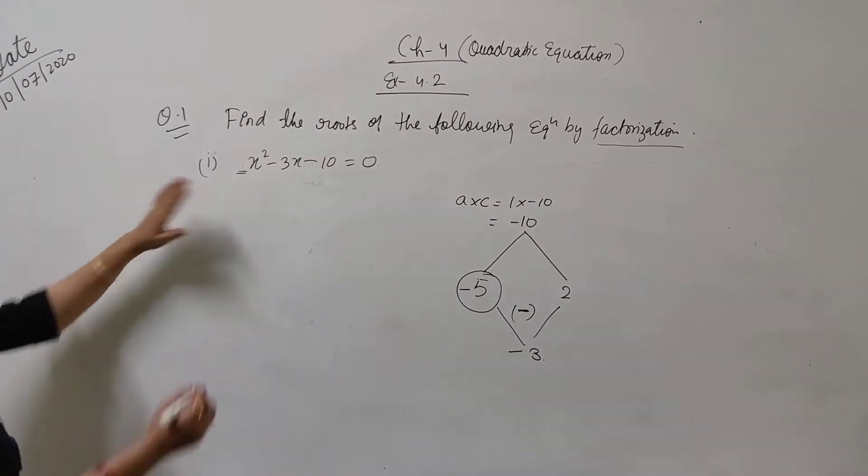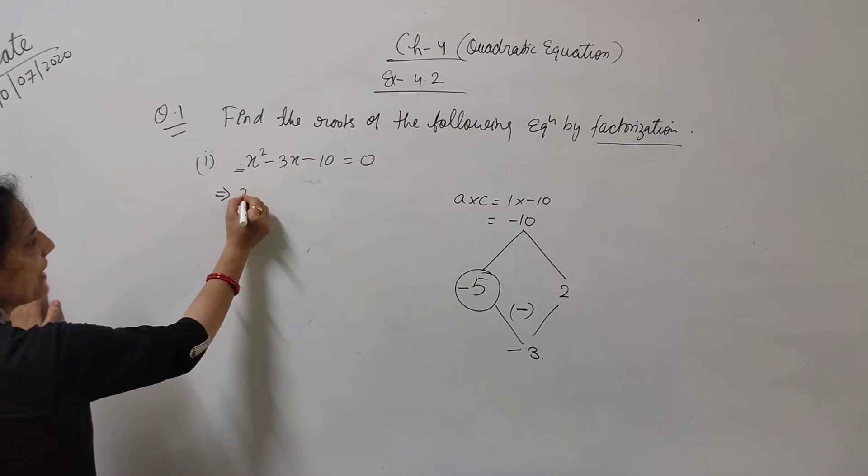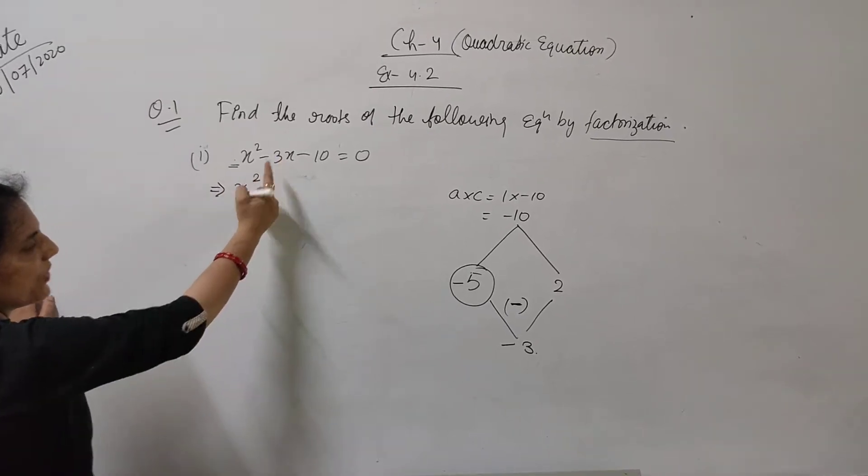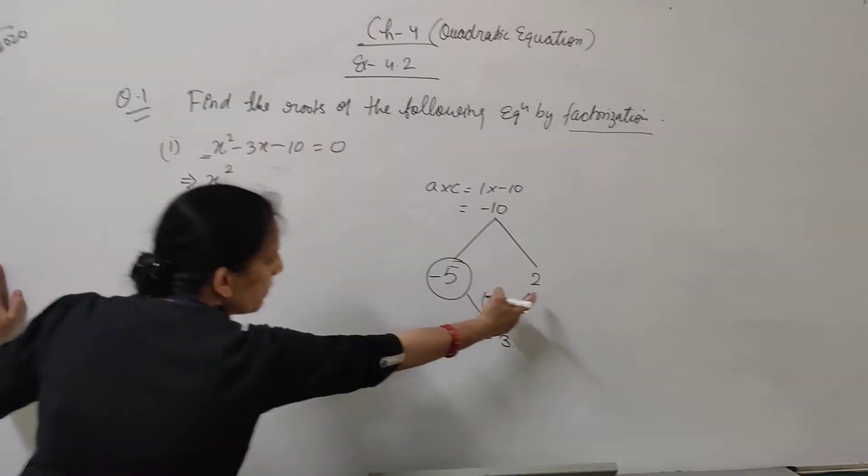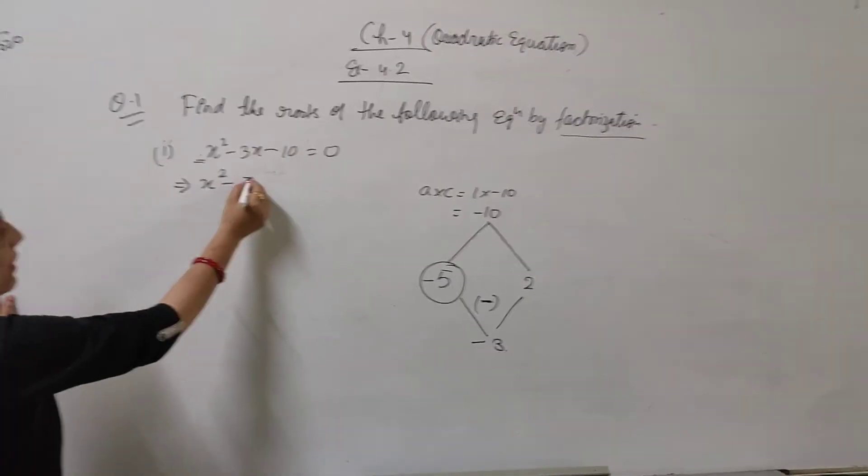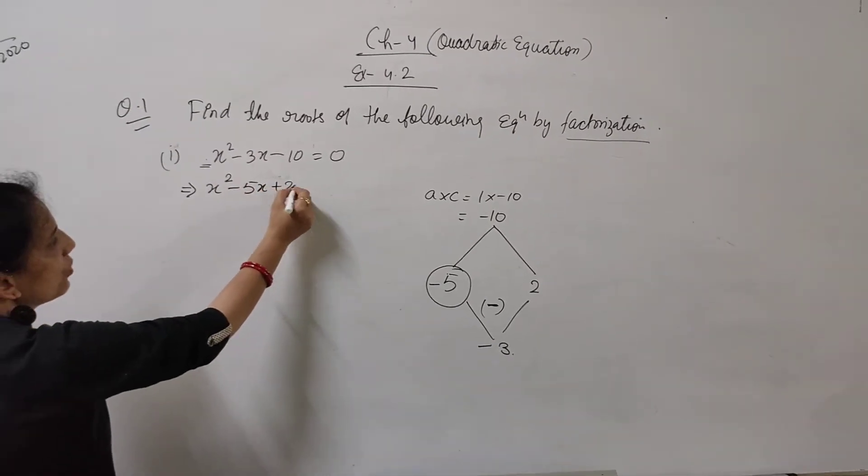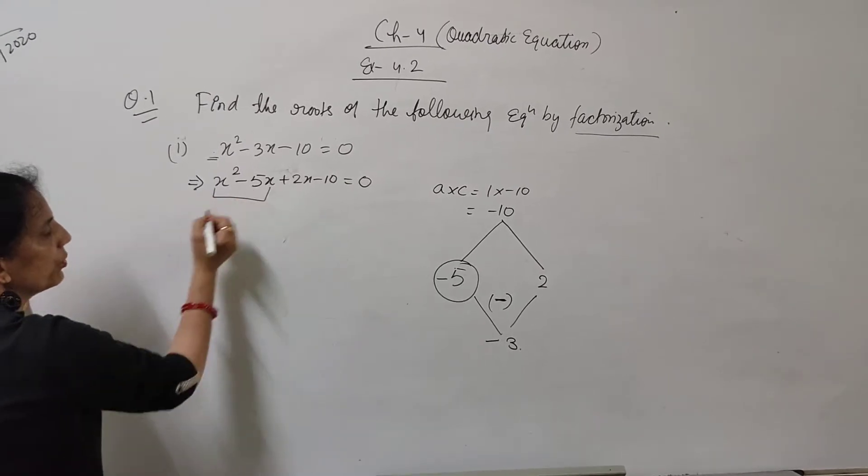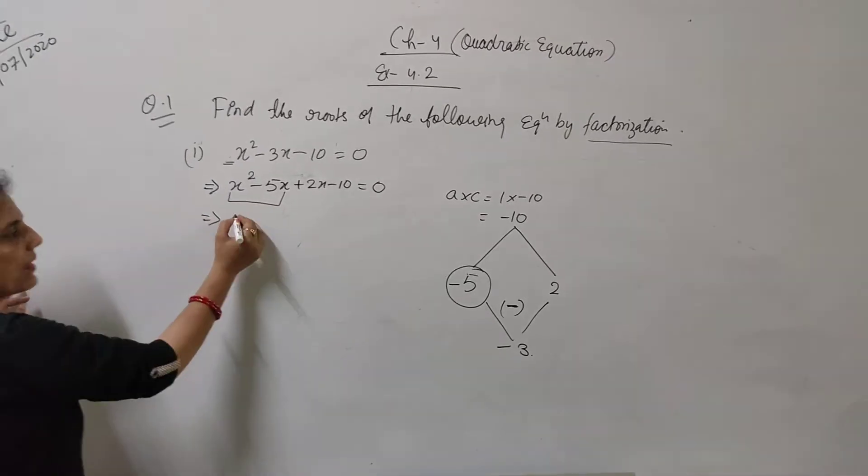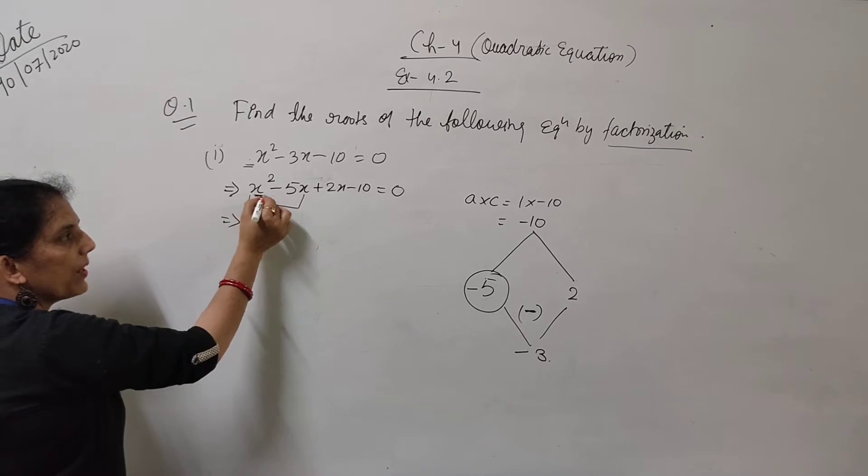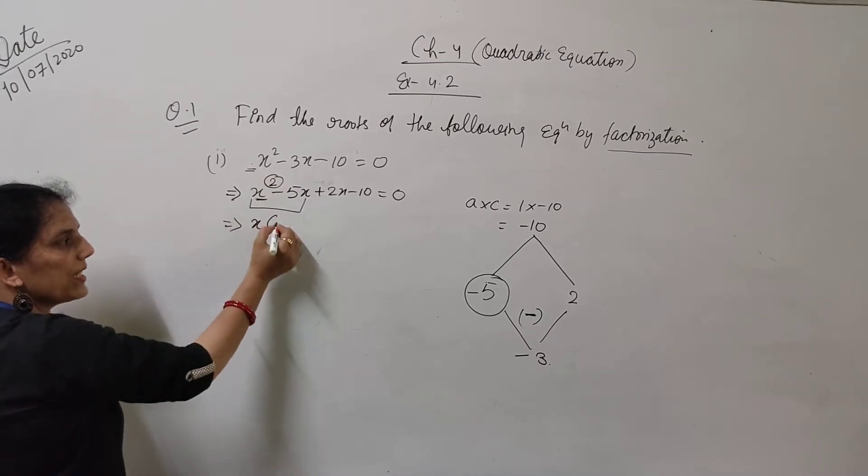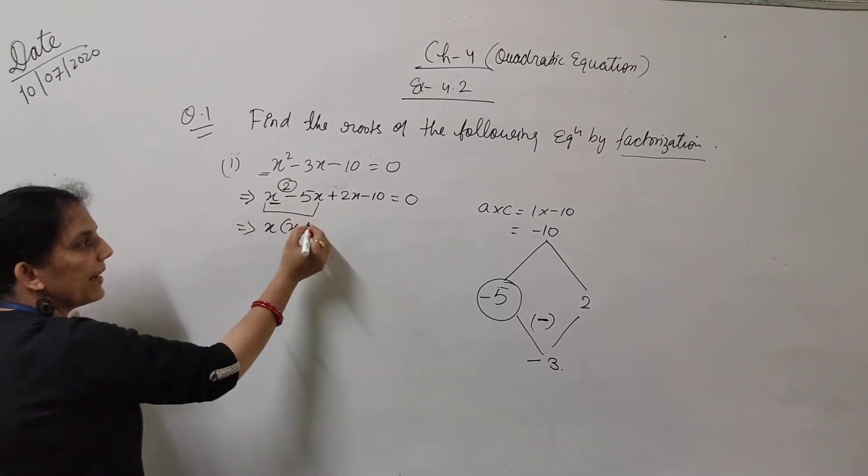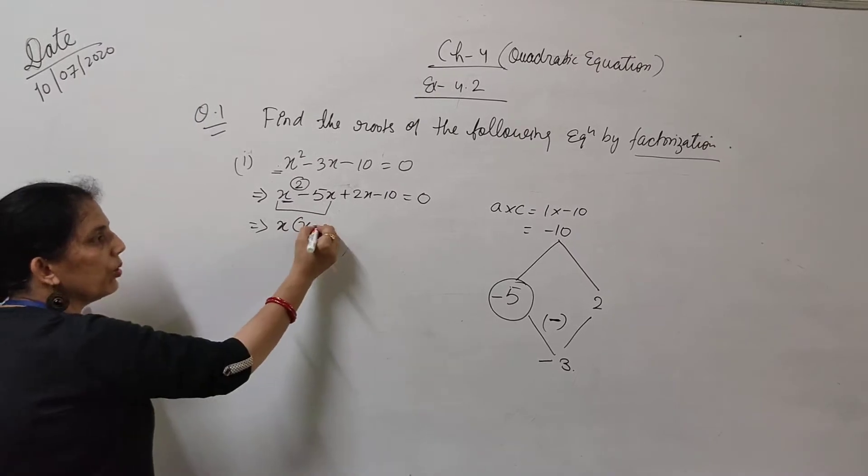Therefore, minus 10 has factors whose difference is minus 3 - minus 5 and 2. So here again I am starting. This implies x square as it is. Minus 3x - we have to take minus 5x plus 2x. These are the two factors. Minus 5x plus 2x minus 10 is equal to 0. Now, in these two terms we have common x.